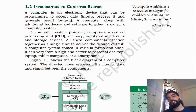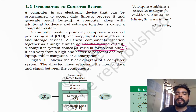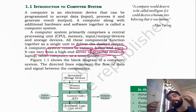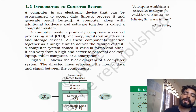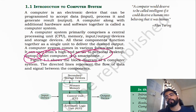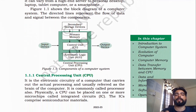Computer systems come in various forms and sizes. It can vary from a high-end server to a personal computer, laptop, tablet, and smartphone. Computer comes in different form sizes as per requirement.